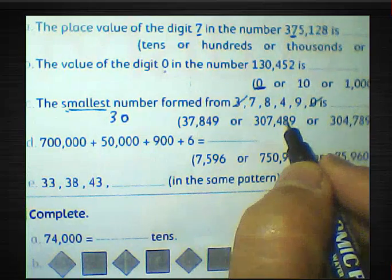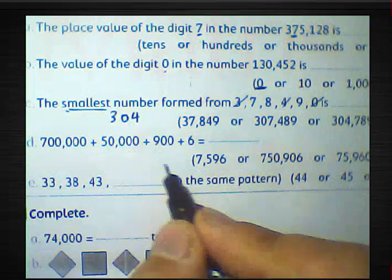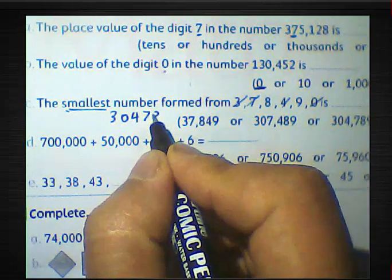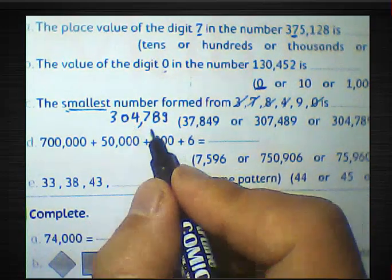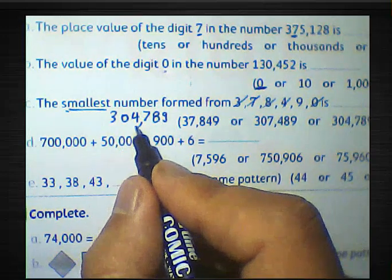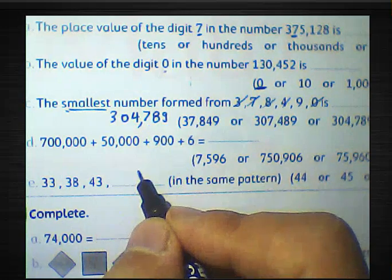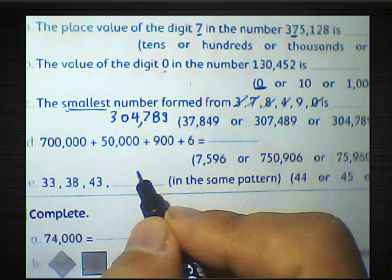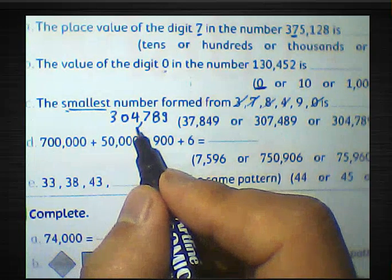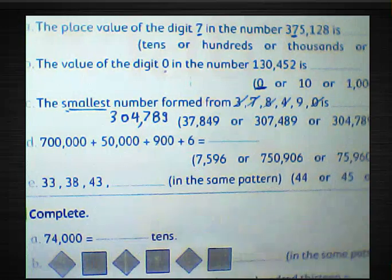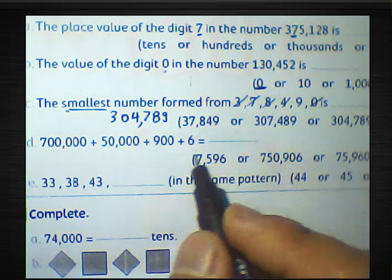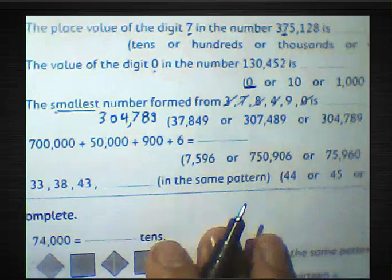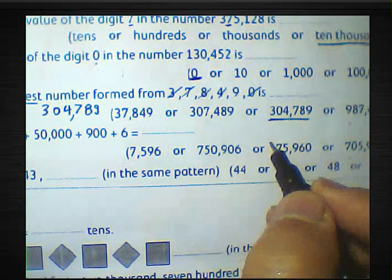Then we arrange: 3, 0, 4, 7, 8, 9. The result will be 304,789. This is the smallest number formed from those digits.